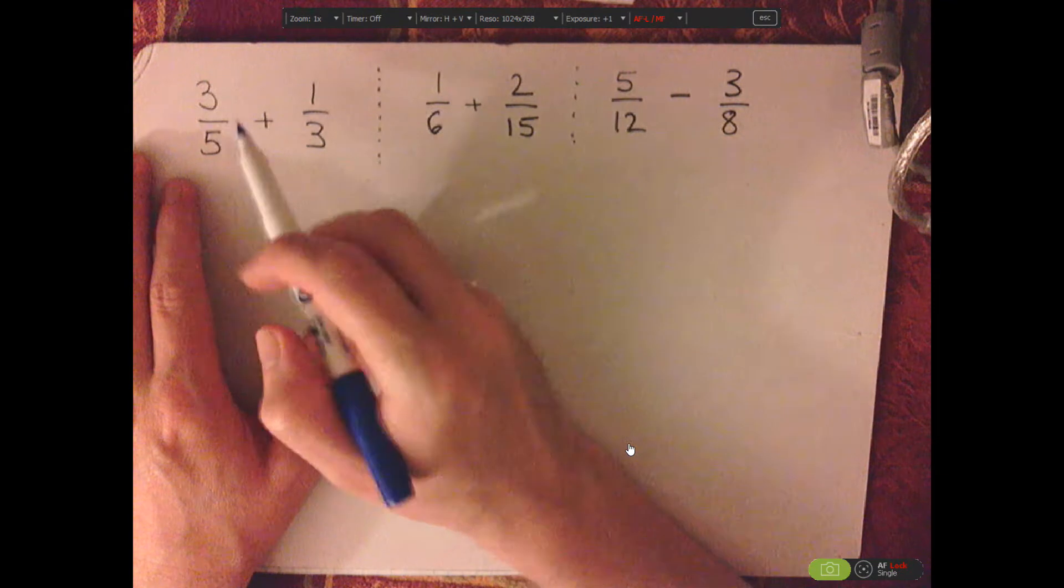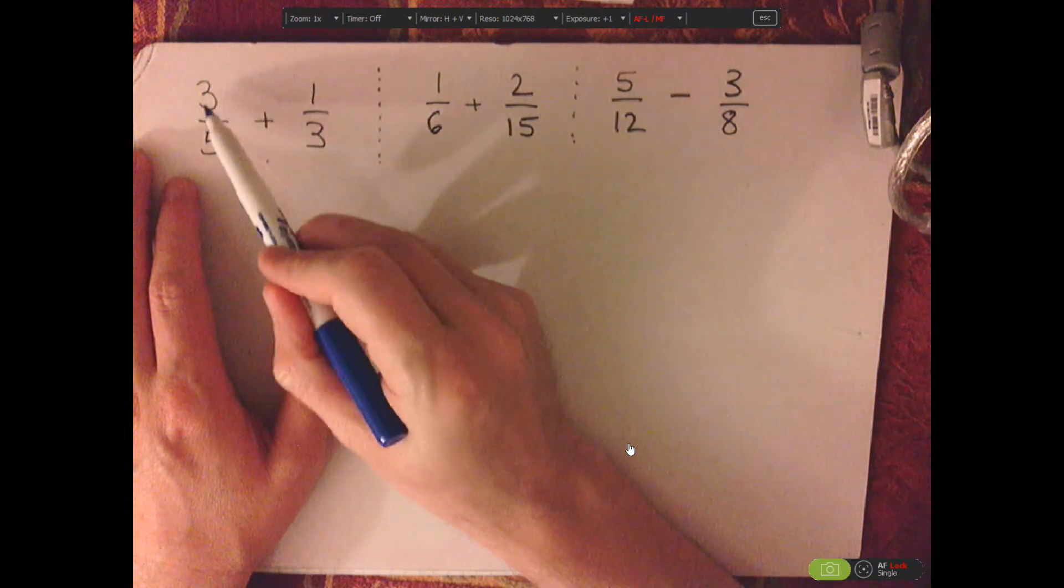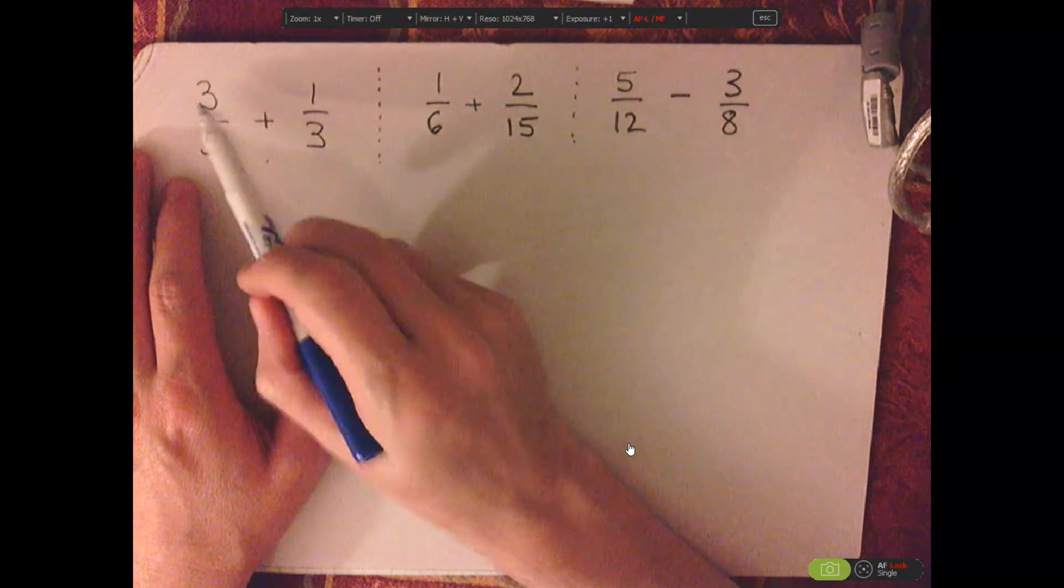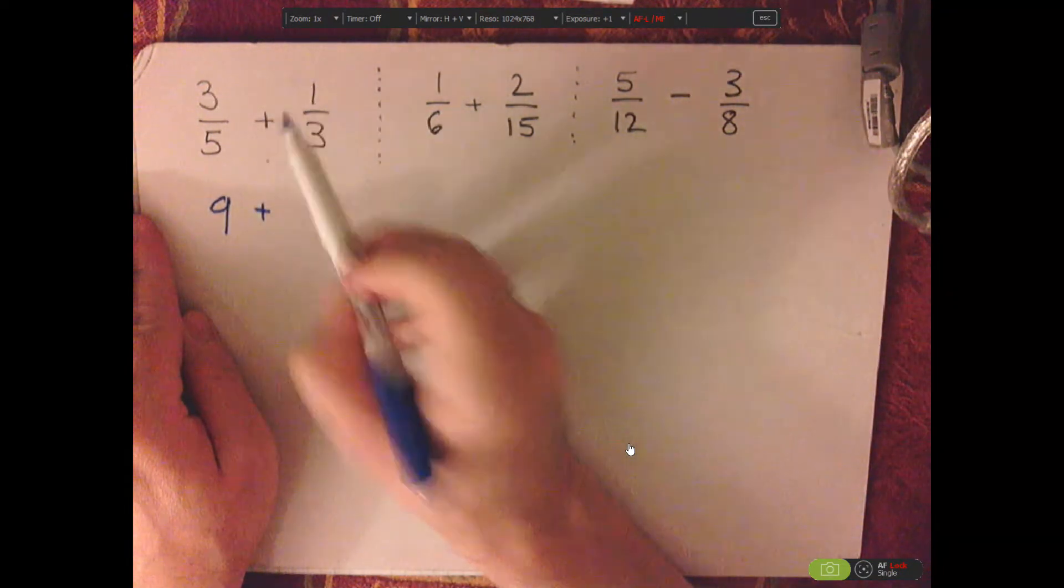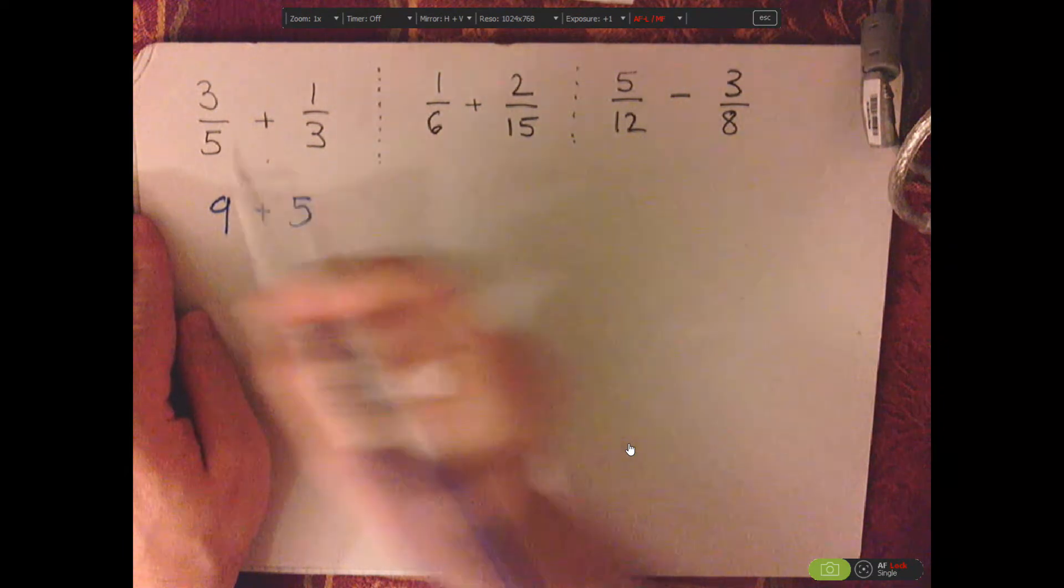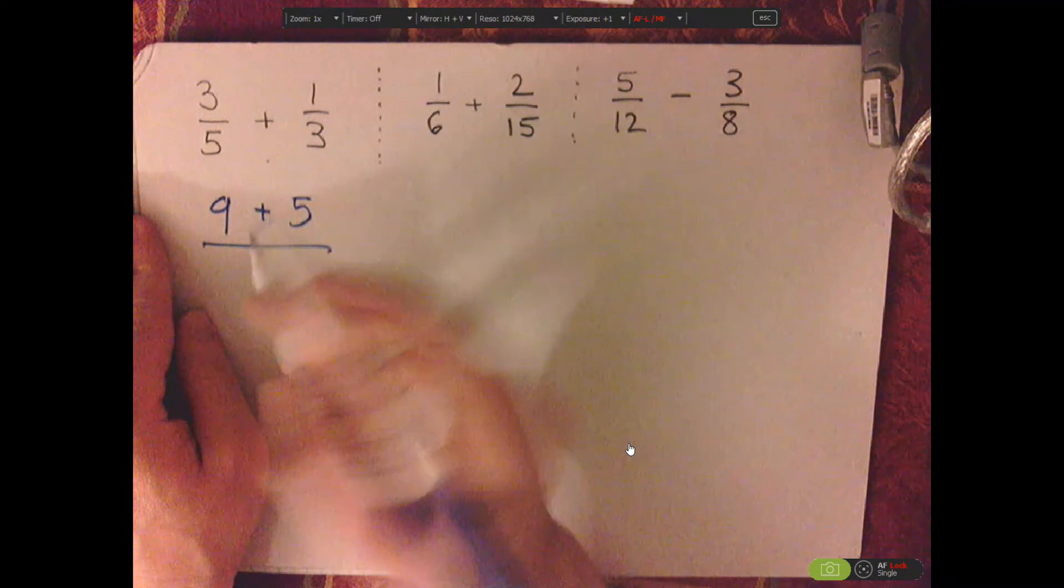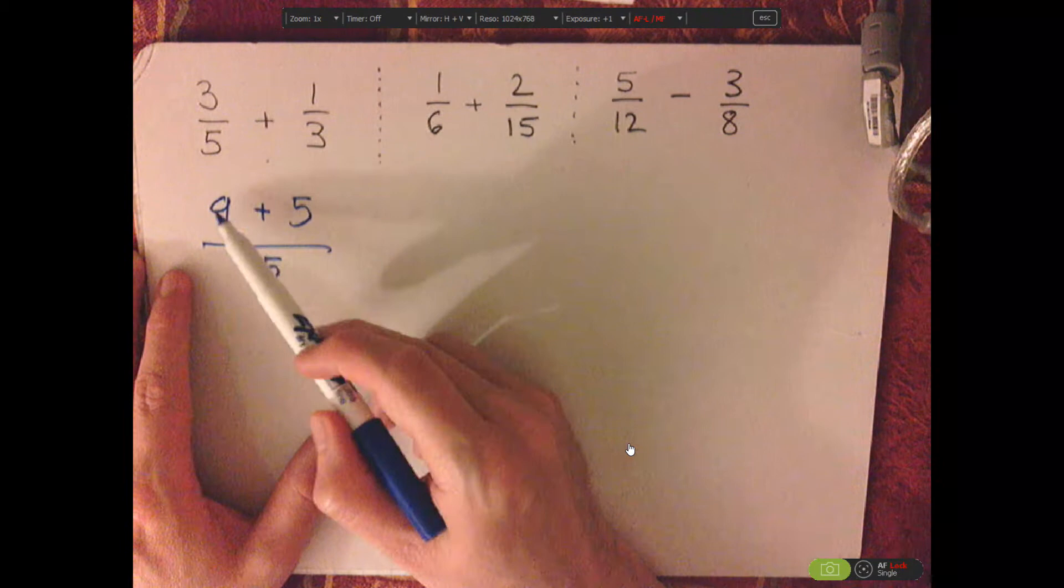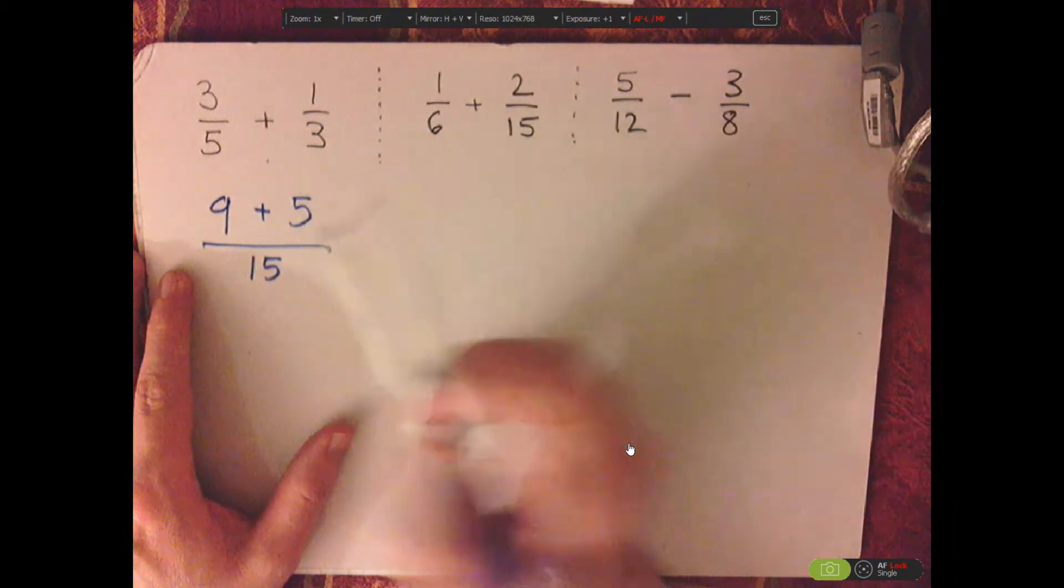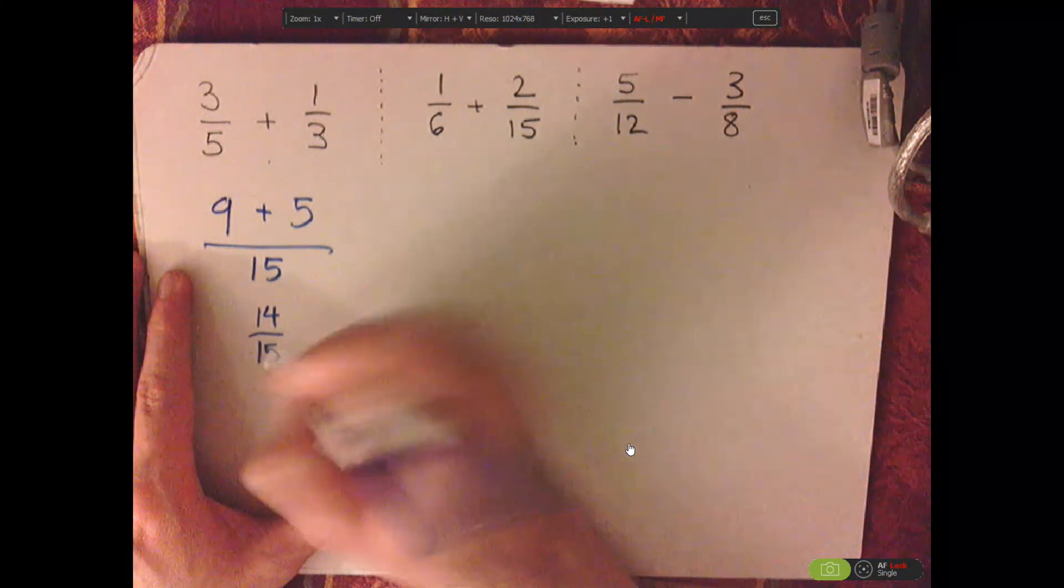So let's start with 3 fifths plus 1 third. The way that you do this is multiply diagonally. So 3 times 3 is 9 plus 5 times 1 is 5. And then for your denominator, multiply the 5 and the 3. That gives you 15. Now add these together, 9 plus 5 is 14, so that's 14 fifteenths.